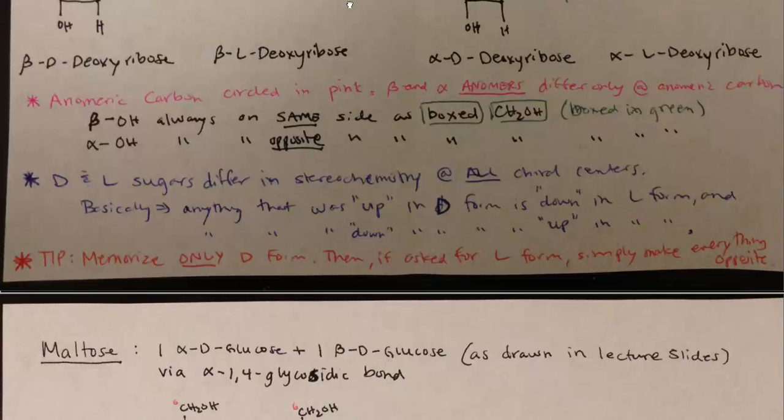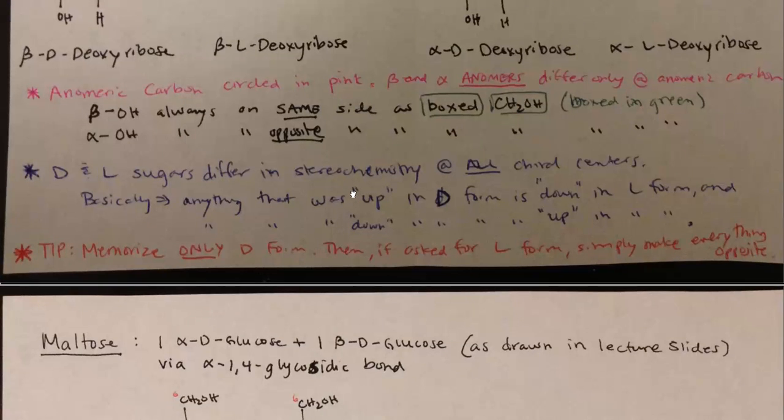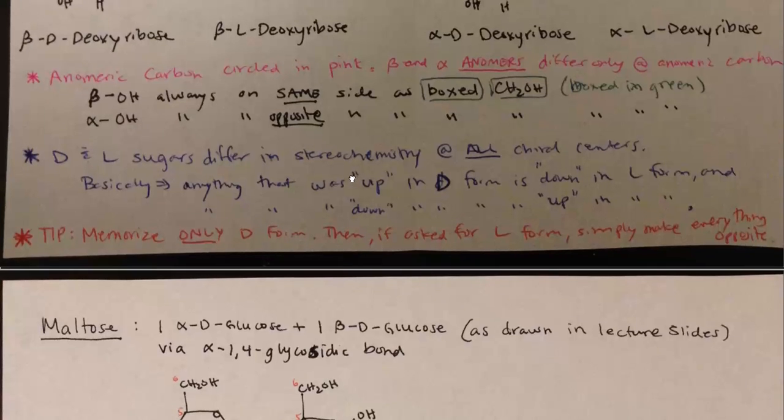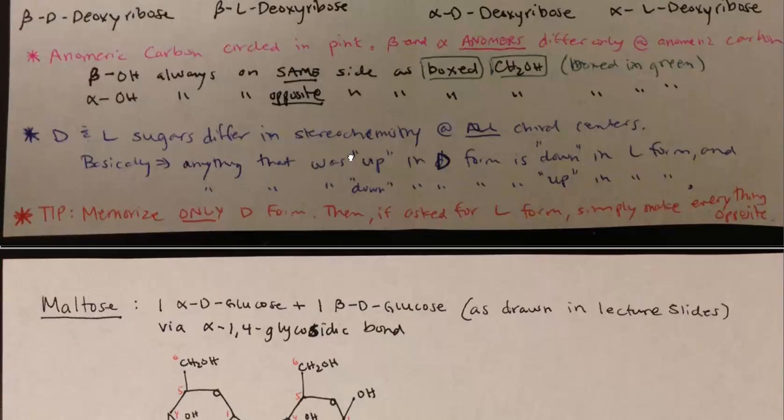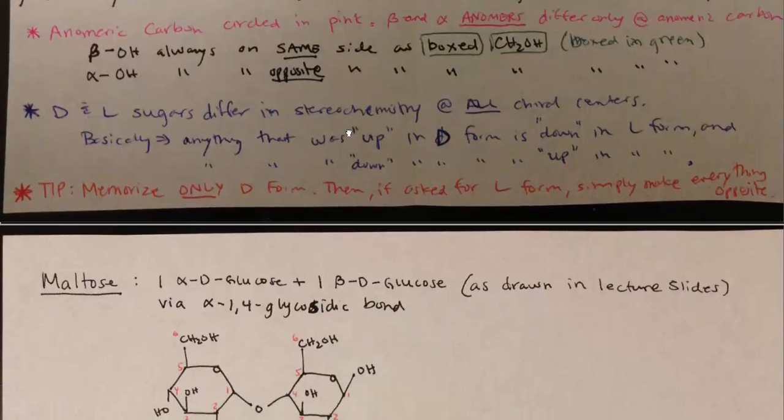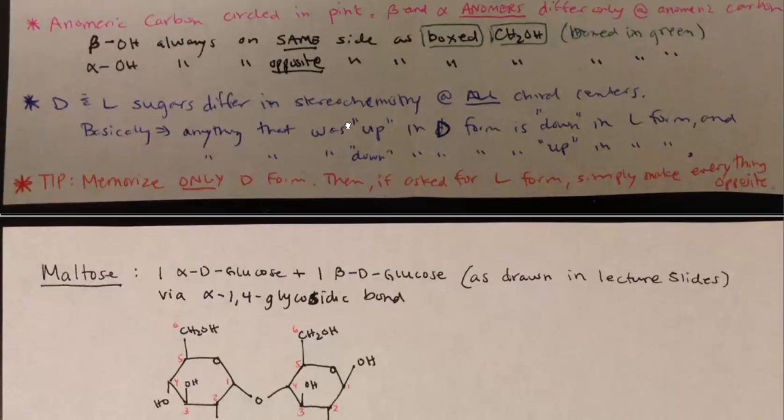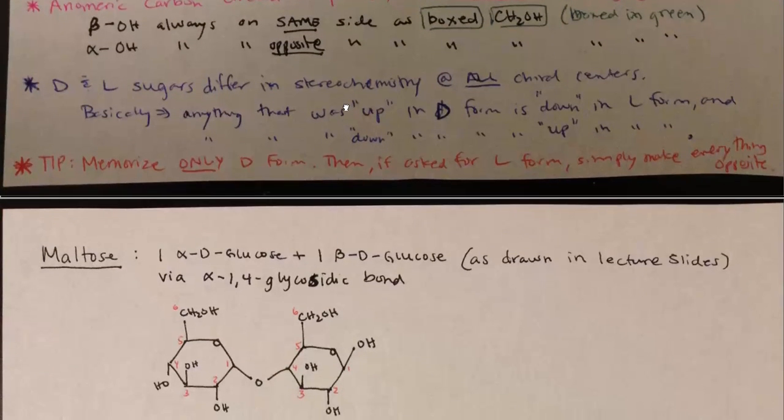The tip for how to remember all these is to just memorize only the D form, especially since they're the ones that exist in biological systems. Then if you're asked for the L form or if you want to draw it on your own, just simply make all the groups opposite.